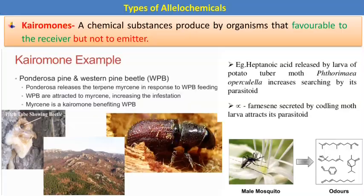Karomones are chemical substances produced by an organism that are favorable to the receiver but not to the emitter. For example, Ponderosa pine releases terpene myrcene in response to western pine beetle feeding, and the western pine beetle is attracted to this, increasing infestation — myrcene is a karomone benefiting the western pine beetle. Another example is the male mosquito attracted to the odors of flowers.